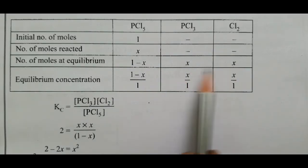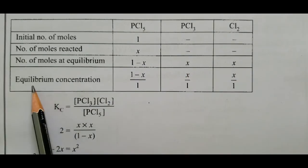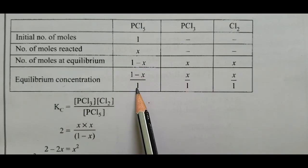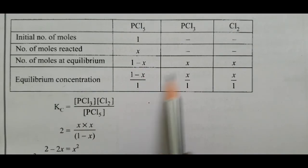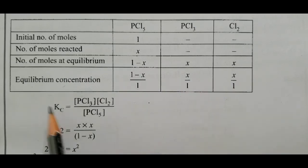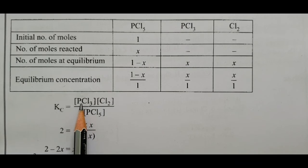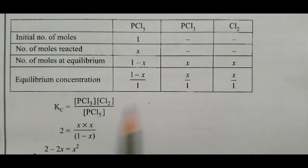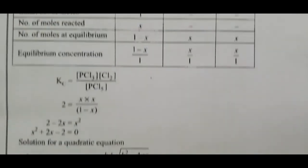Volume = 1 dm³, so equilibrium concentrations equal moles directly: [PCl₅] = 1−x, [PCl₃] = x, [Cl₂] = x. Kc = [PCl₃][Cl₂]/[PCl₅] = x²/(1−x) = 2. So x² = 2(1−x), giving x² + 2x − 2 = 0.